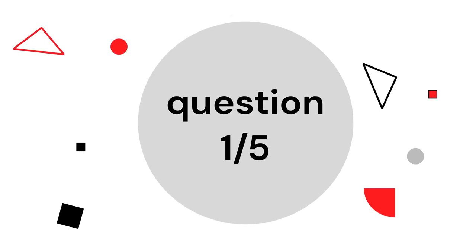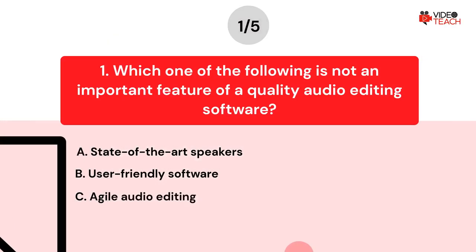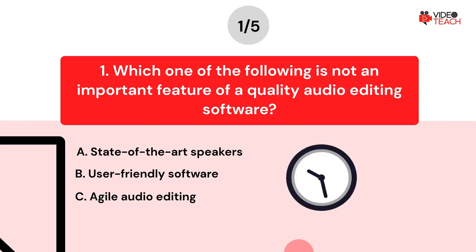Question number one. Which one of the following is not an important feature of a quality audio editing software? Option A: State-of-the-art speakers. Option B: User-friendly software. Option C: Agile audio editing. Now you have about 15 seconds to think about your answer.